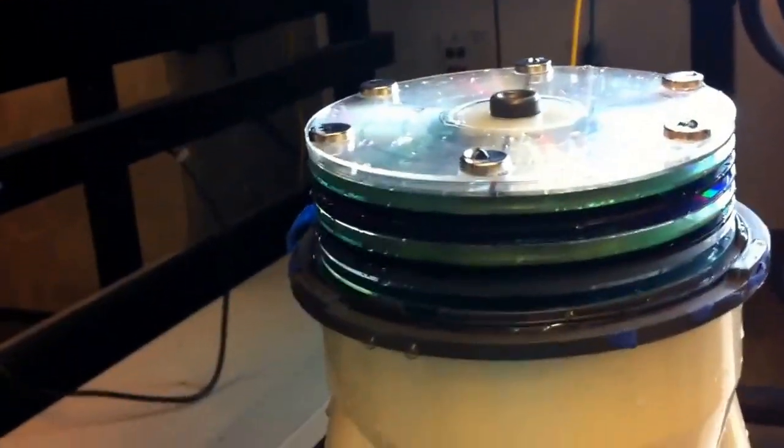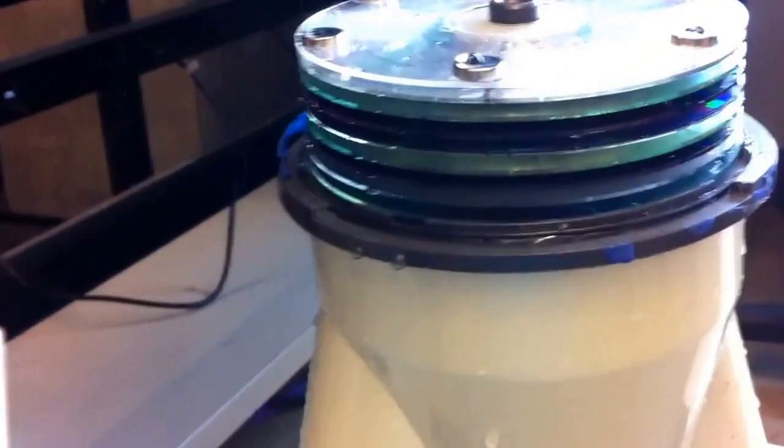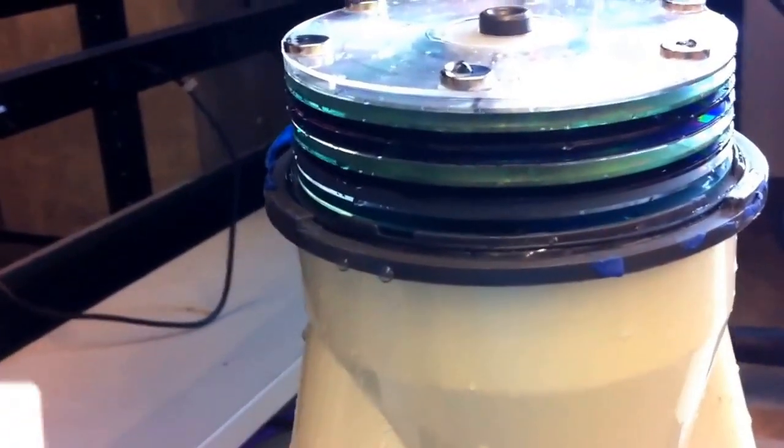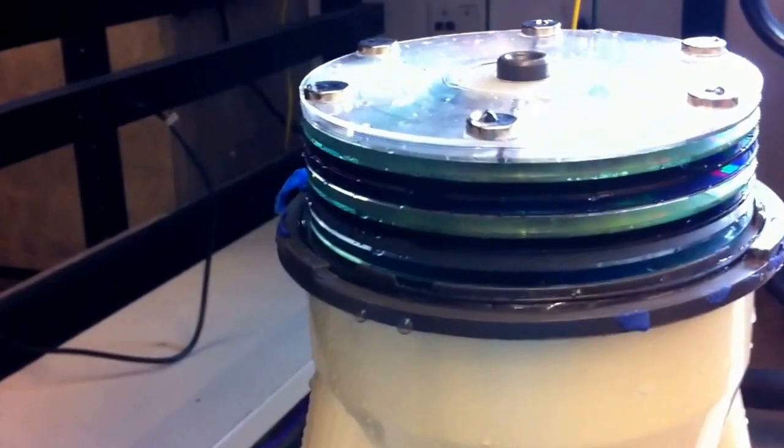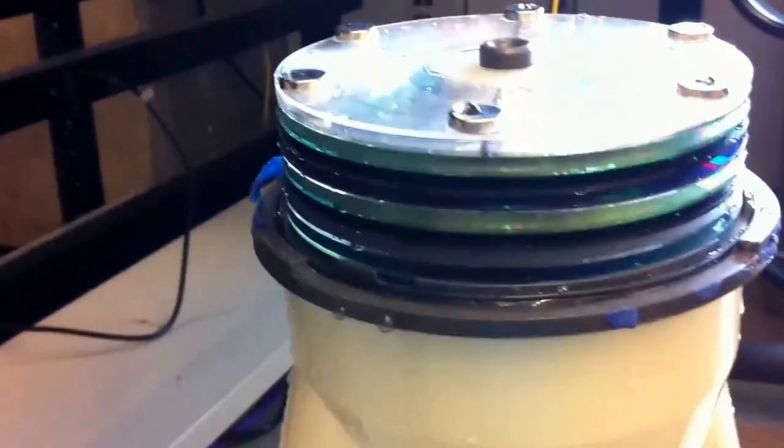A Tesla turbine works differently than a water wheel or a Pelton wheel. Rather than the water pushing on paddles to turn the wheel, in a Tesla turbine a stack of flat platters are moved by the adhesive forces, cohesive forces, and boundary forces of the water.